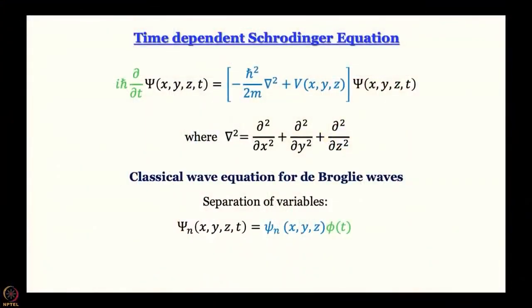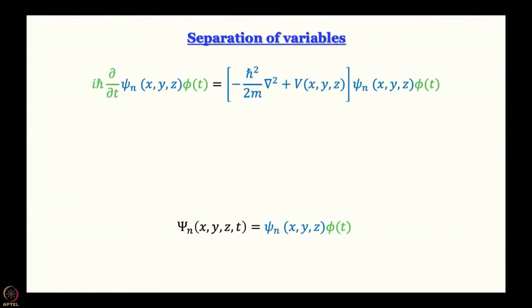The way to handle this classical wave equation for de Broglie waves — which is a mixture of spatial and temporal coordinates — is to express the wave function as a product of a space-dependent part and a time-dependent part, and hence use the technique of separation of variables. When we plug in this form of the wave function into the time-dependent wave equation, the space-dependent part is written in blue and the time-dependent part in green.